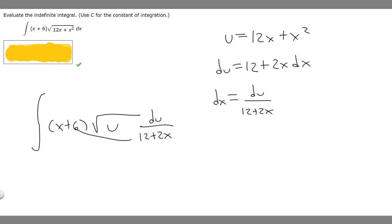What you can notice here is these aren't the same, but if we factor out a 2 from the denominator it becomes 2(6 + x), which is basically just x + 6. Then now we can cancel these, so these will cancel.